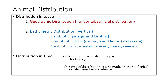First, we will see the distribution of animals in space, which is divided into geographic distribution and bathymetric distribution. Geographic distribution is also called horizontal or surface distribution, which deals with the distribution of animals over the surface of earth — in water, on land, in different continents and islands. Based on the distribution of vertebrates, the earth's crust is divided into six realms, which will be discussed in the next topic on geographical realms.